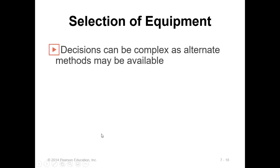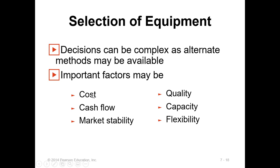Let's first discuss equipment selection. Selection of equipment is very important — what sort of equipment you are going to select for your plant and production to achieve your desired goals. It is complex because alternate methods may be available. Important factors to consider include cost, cash flow, market stability, quality, capacity, and flexibility. We need to see capacity and flexibility for mass customization, and consider market stability if technology changes.